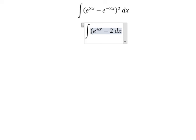Minus 2, because e to the power of 2x multiplied by e to the power of negative 2x, you get e to the power of 0, so you get 1. That's why we just have negative 2.